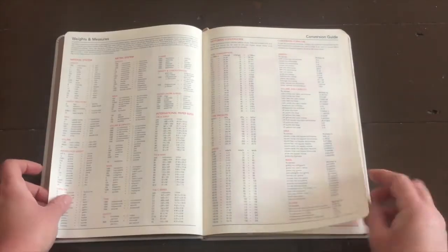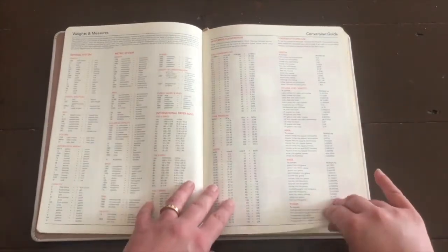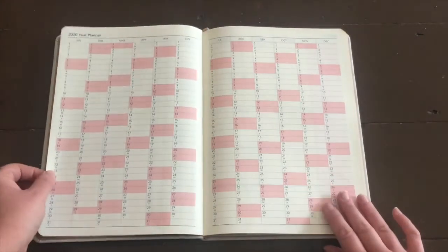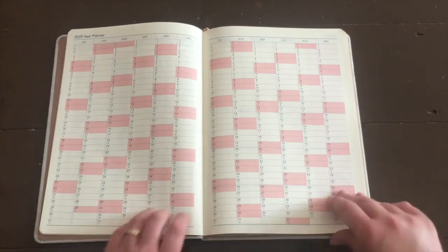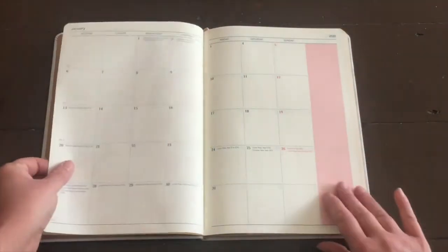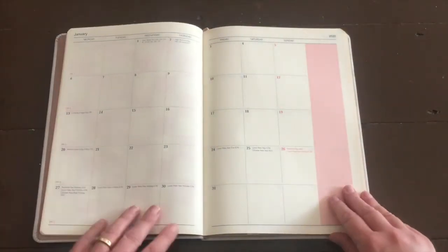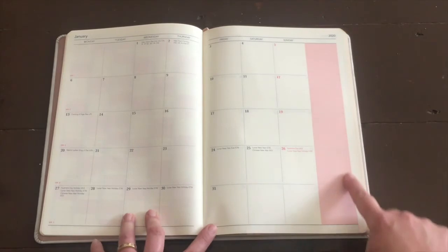Over the page, you have your international holidays, then your dialing codes and time zones. It's such a fun thing to still have in there when you have Google these days. Weights and measures and the conversion guide are at the front of this one. And then the year planner is color coded so you can see everything really well at a glance.